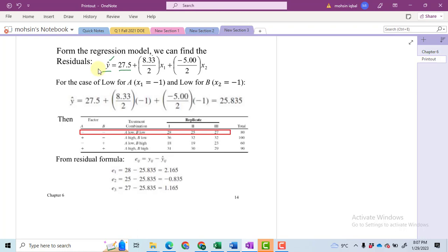This 8.33 is the effect of A, multiplied by x1, the first independent variable, plus minus 5. This minus 5 is the effect of B divided by 2 average, and then x2.